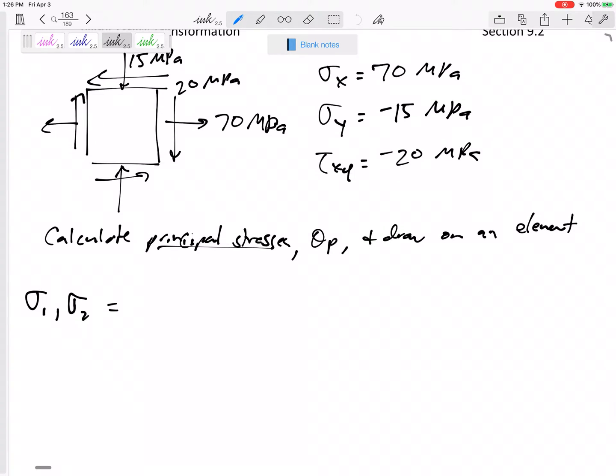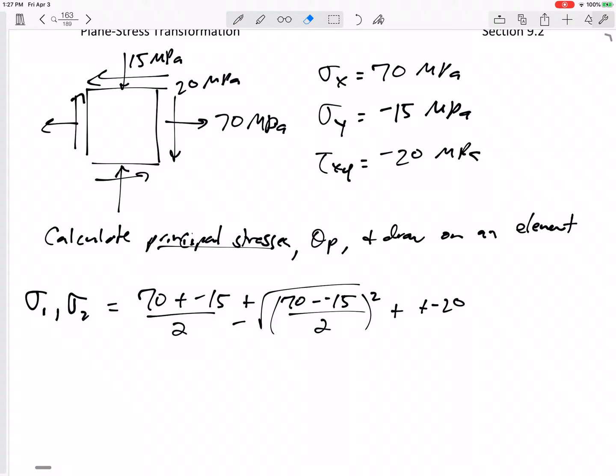So let's go back to our notes and let's fill this out. Alright, so sigma x is 70 plus sigma y negative 15 divided by two, plus and minus the square root of sigma x minus sigma y—be careful with minus and negatives right there—quantity squared, plus negative 20 over here, plus the magnitude squared of tau xy.